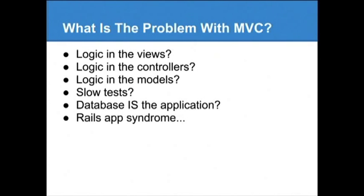Fat models lead to things like mixins and modules and concerns. Those are fairly reasonable if you want your app to be built around the database, or around an ORM like ActiveRecord. But it doesn't really fix anything, because you keep moving your logic down the tree until you don't have any other place to put it. When it gets to that model level, you start spreading your models as thin as you can, when in reality you could sidestep the whole process with a slightly better architecture.